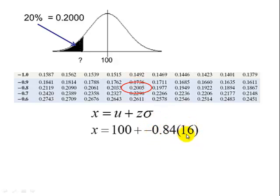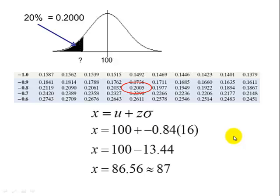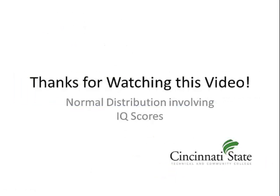And then we multiply that by our standard deviation, 16. So this is the same thing as 100 minus 13.44, and we get 86.56, which rounds to 87. So the IQ score that separates the bottom 20% from the top 80% is 87. Thanks for watching.